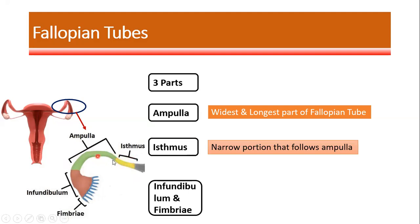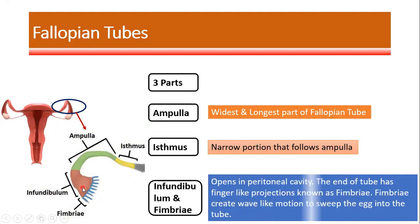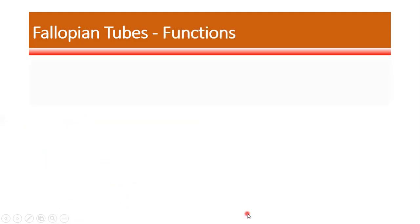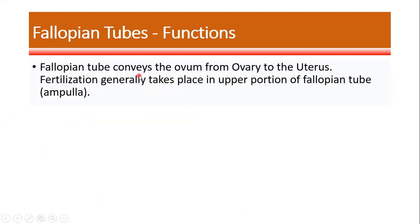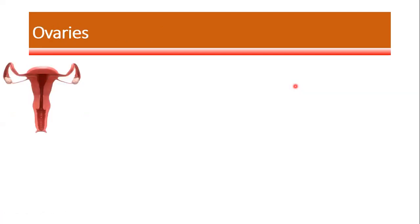The isthmus is the narrow portion that follows the ampulla. The infundibulum opens directly into the peritoneal cavity, and the end of the infundibulum has finger-like projections known as fimbriae. The fimbriae create a wave-like motion to sweep the egg into the tube. The function of the fallopian tubes is to convey the ovum from the ovary to the uterus, with fertilization generally taking place in the ampulla.